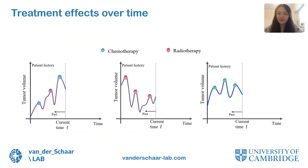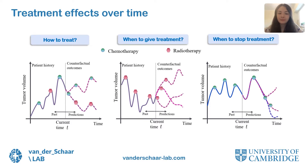In this diagram we illustrate three patients with different histories for how the tumor volume has evolved in the past and different histories of previously assigned chemotherapy and radiotherapy treatments. For each patient, based on their history, we want to decide things such as what is the best future treatment plan, when to give the next treatment, or when to stop the treatment if it becomes too toxic. To make such decisions, we want to develop a method that can estimate counterfactual outcomes for each patient under an intended sequence of future treatments.